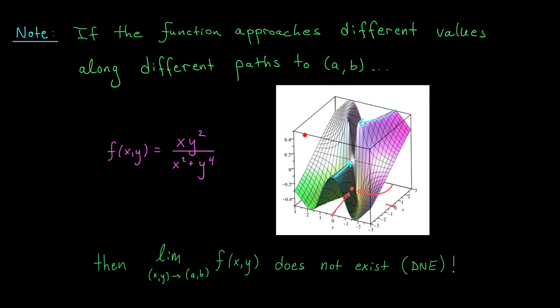Now it's approaching this value, z equals 0.5. So what we've shown is that there are at least two different paths to (0,0) along which the function is approaching different values.